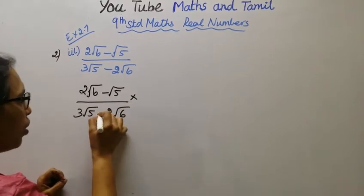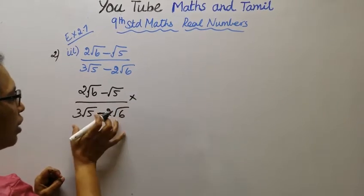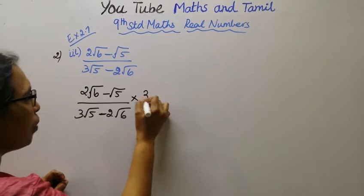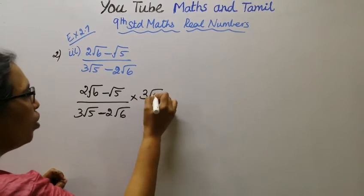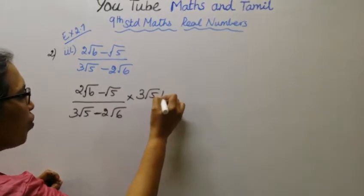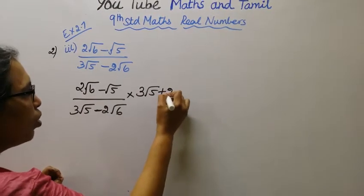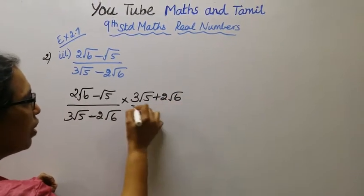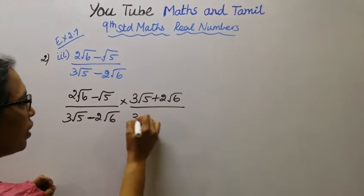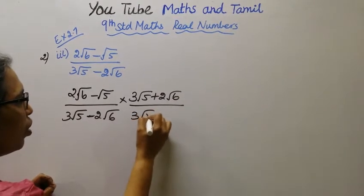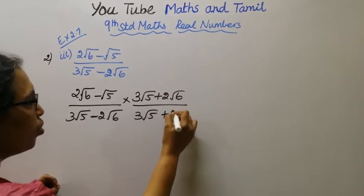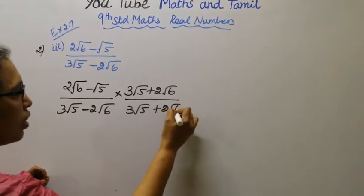What we do is multiply and divide by the conjugate of the denominator: 3 root 5 plus 2 root 6, divided by 3 root 5 plus 2 root 6.